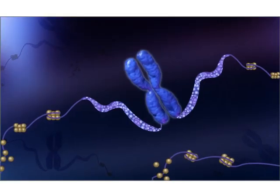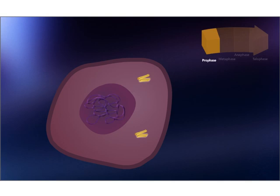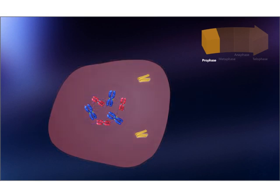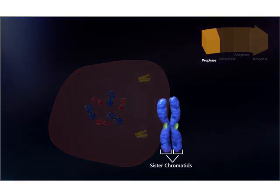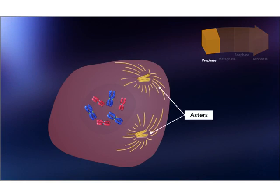In a microscopic view, we can observe the nucleolus, chromatin network, and centrioles in a cell. During the prophase stage, the chromatin network changes to chromosomes, the nucleolus and nuclear membrane disappear, and chromosomes become visible as two sister chromatids held together at the centromere. The cytoskeleton disassembles and centrioles change to star-shaped structures called asters, and spindle fibers begin to form.